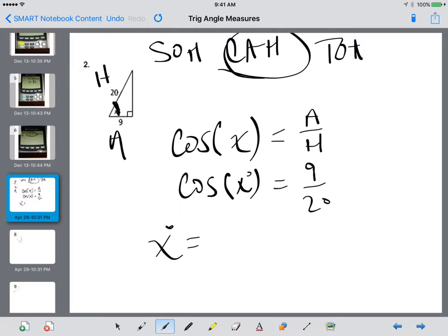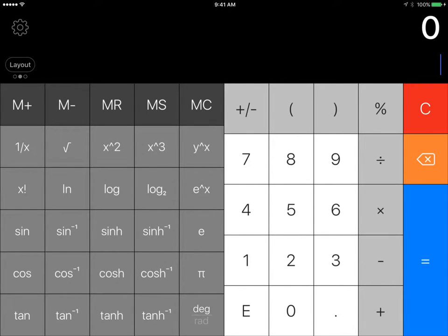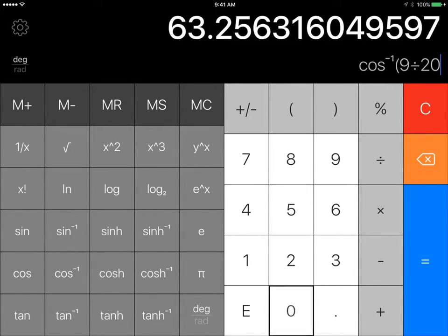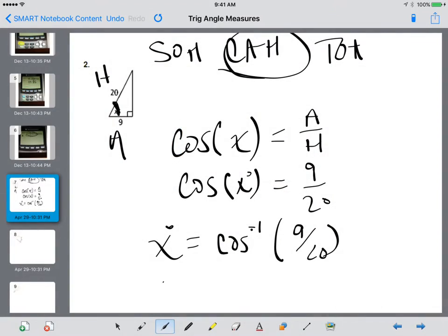So x is going to equal cosine inverse. So inverse of cosine, cosine negative 1 of 9 divided by 20. I'm going to grab a calculator to help us with this. I don't have a scientific calculator on the iPad that I'm creating the video on, so you just have to bear with me with this calculator. So we can type in cosine negative 1, and that is 9 divided by 20. We get 63.256. That third number is bigger than 5, so I'm going to say 63.26. So you can say x equals 63.26.